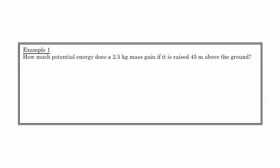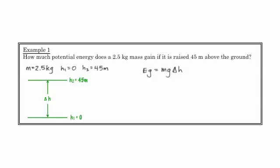But we're going to raise it up to 45 meters above the ground. We're going to say, okay, we know that h1 is equal to zero, h2 is equal to 45. The mass of this object is 2.5 kilograms. So here's really what we're doing. We're changing the height of this object from a position of zero to a position of 45. We're going to say, how much energy does it gain?